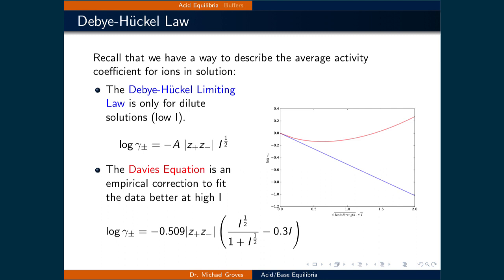Acid-base equilibria are ionic solutions, so our assumption of the average activity coefficient being equal to 1 is not valid. Recall that in order to calculate the average activity coefficient, we can use the Debye-Hückel limiting law or the Davies equation, depending upon the ionic strength of the solution.